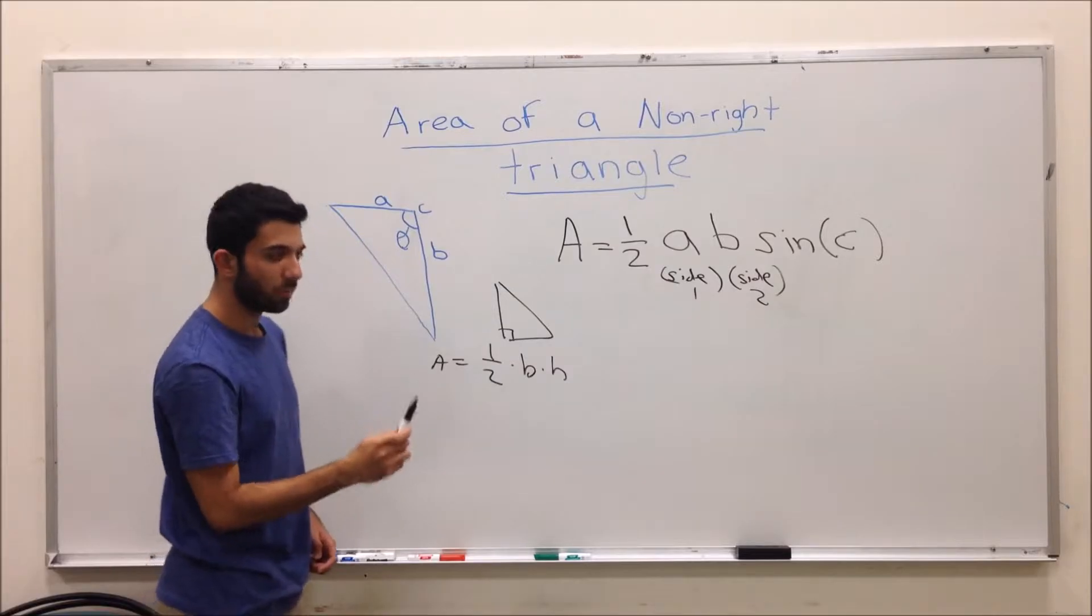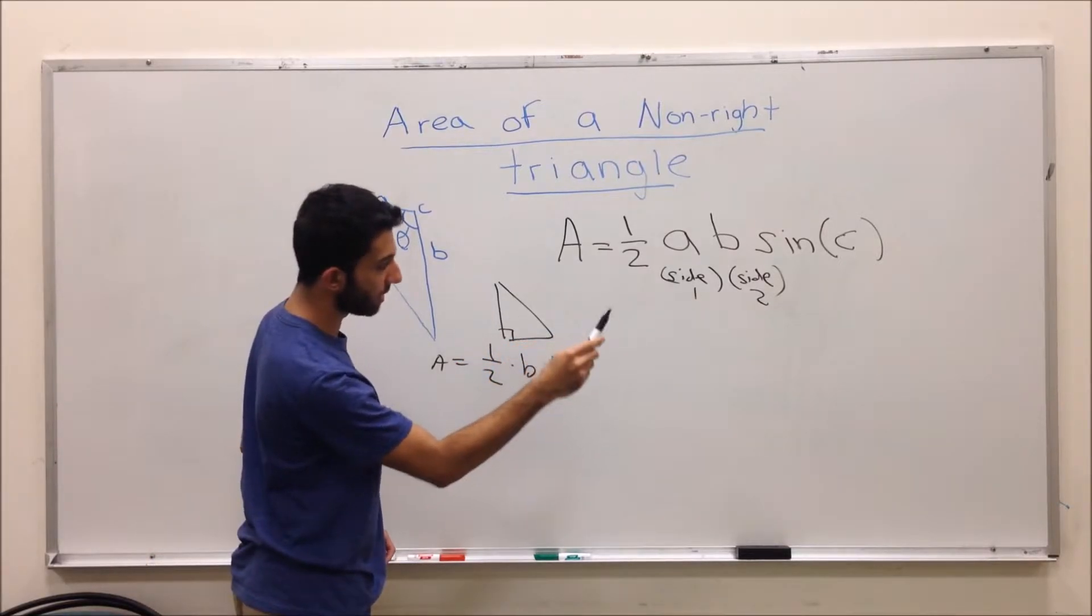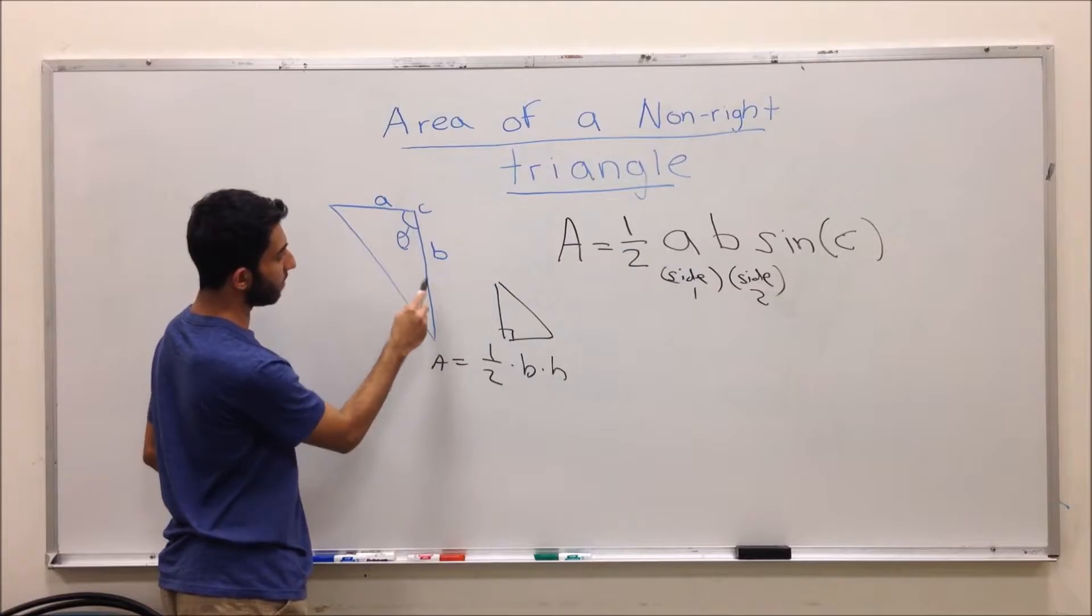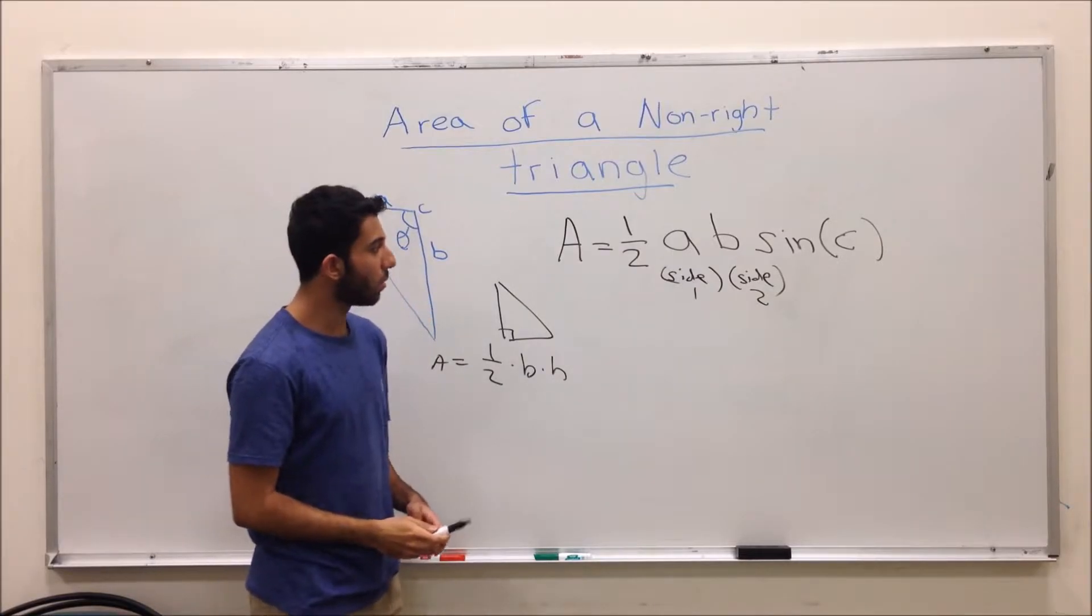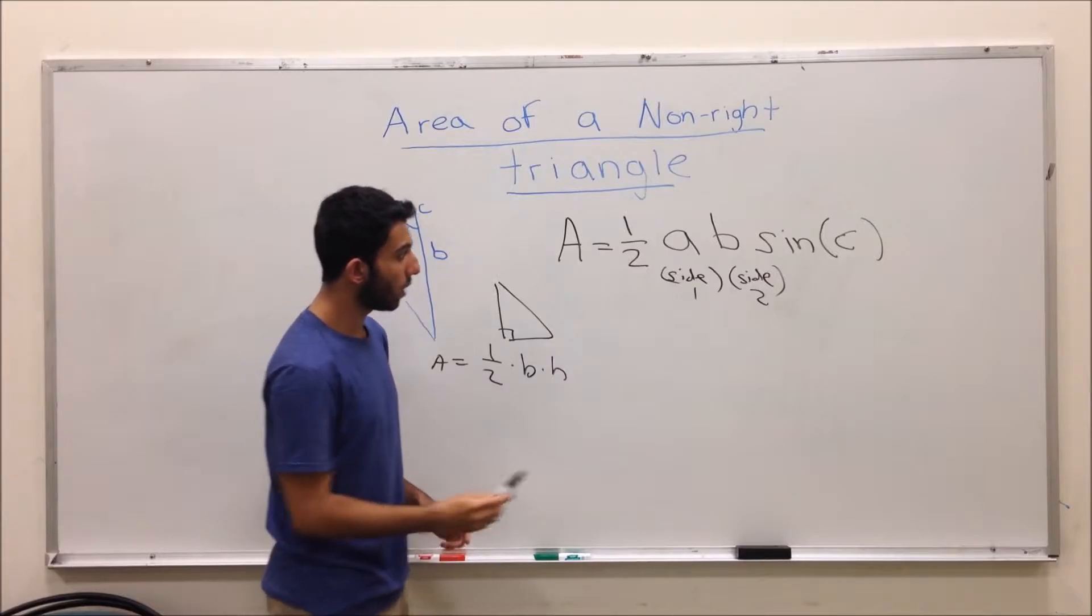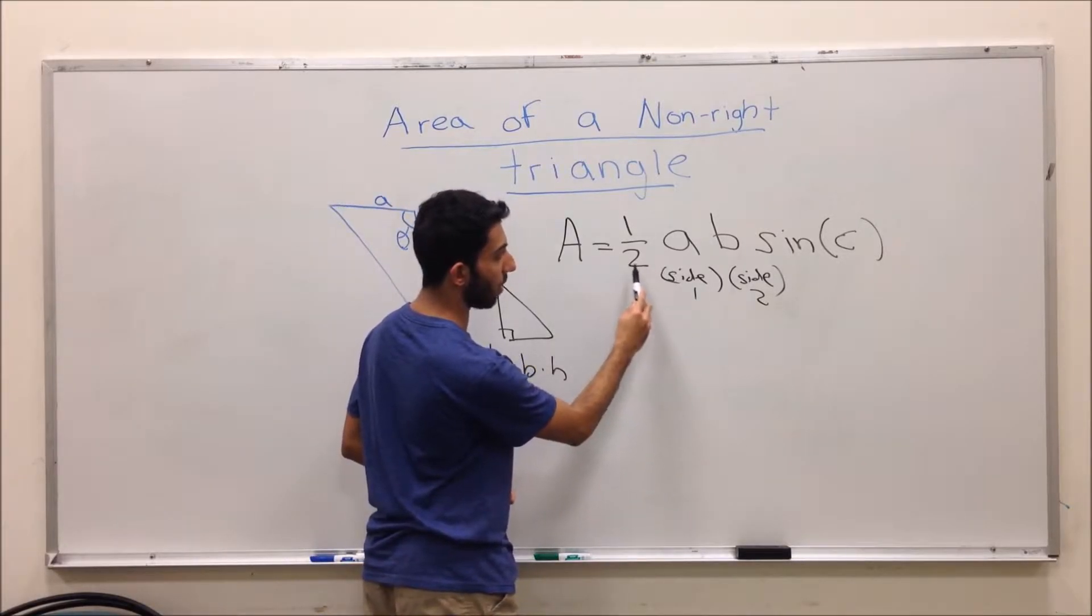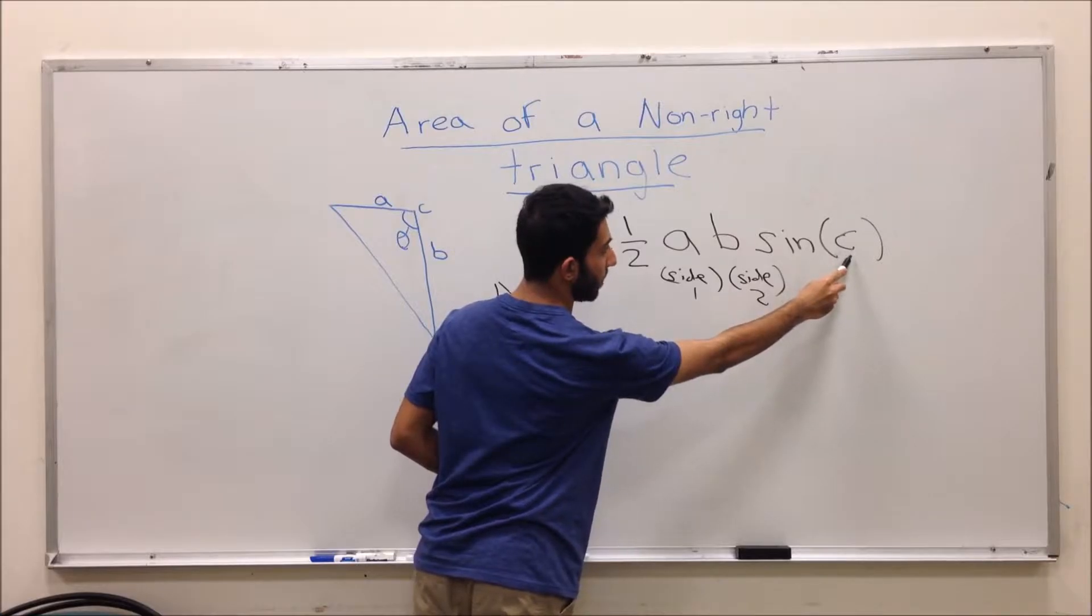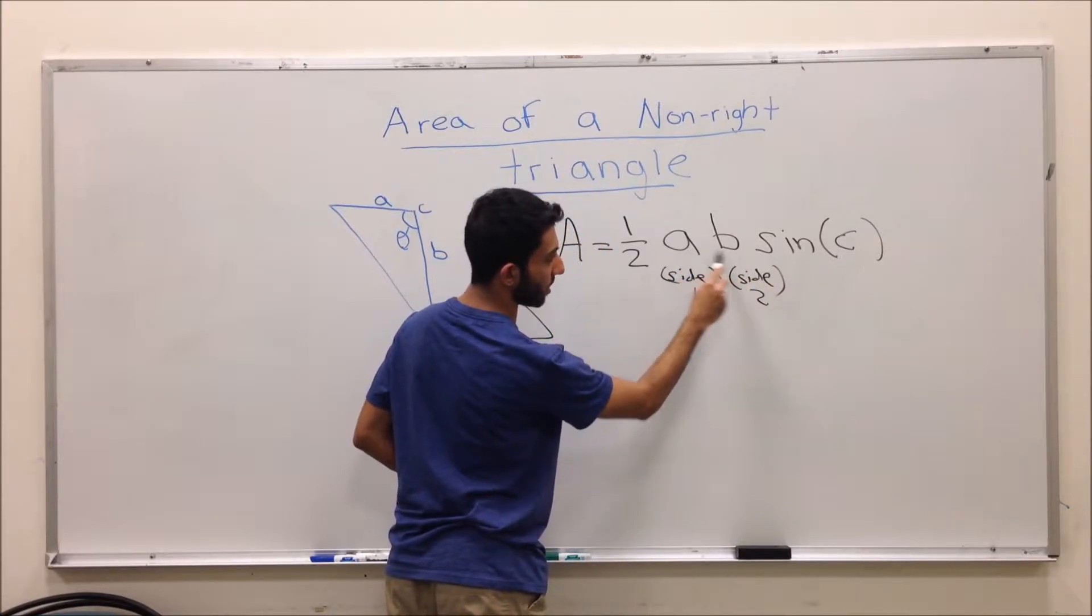The angle has to be, the angle of sine c has to be between side a and side b. So always keep in mind that whenever you take the area of a non-right triangle, make sure that the angle that you are using inside one-half a b sine c, the c has to be the angle between these two sides.